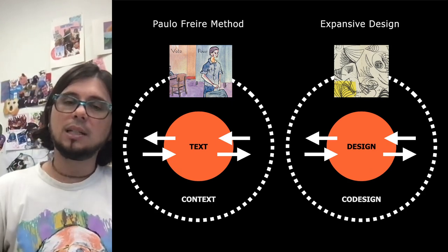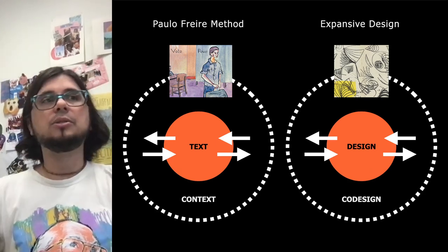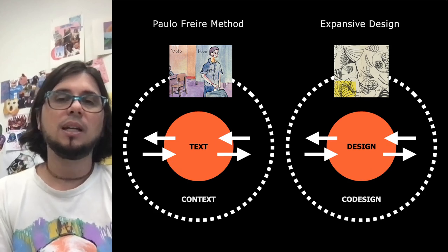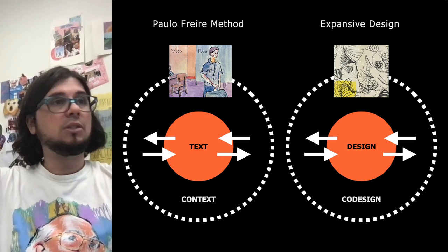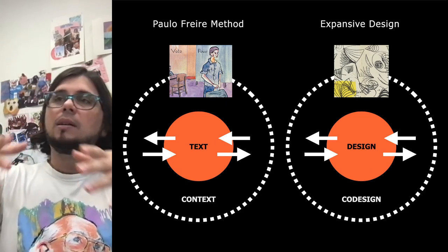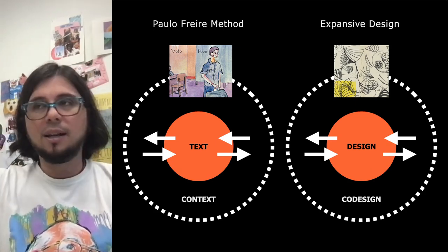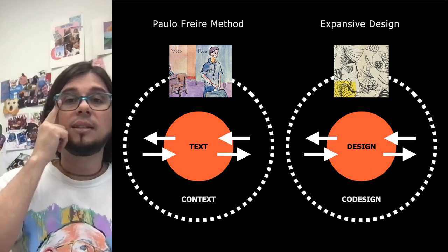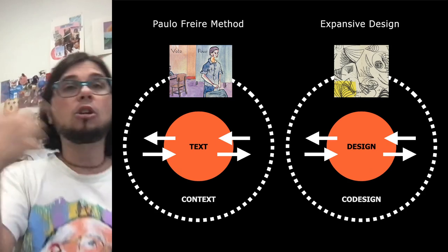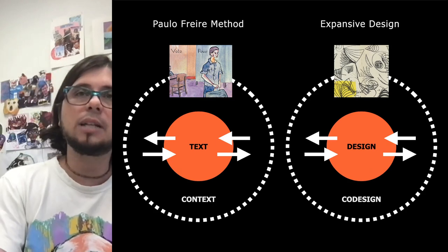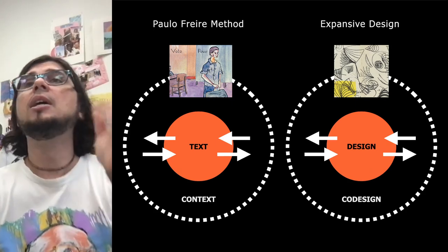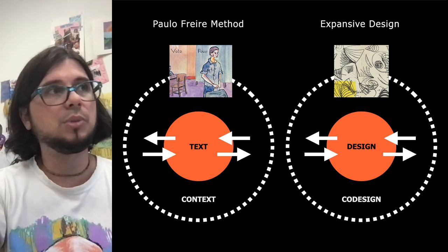This whole process of bringing together different images, models, people, money, and calculations — this is all co-design. Expansive design tries to expand the boundaries of this co-design. Just as Paulo Freire's methods try to expand the boundaries from the text to the context, expansive design tries to help you expand from design to co-design. In this specific lecture, I'm emphasizing visual thinking as a means — as a medium, a tool, or instrument — to facilitate or complicate this expansion from design to co-design. In a past lecture I also presented Lego Serious Play as a tool with the same purpose, and we'll experiment with other tools throughout this research and practice course.